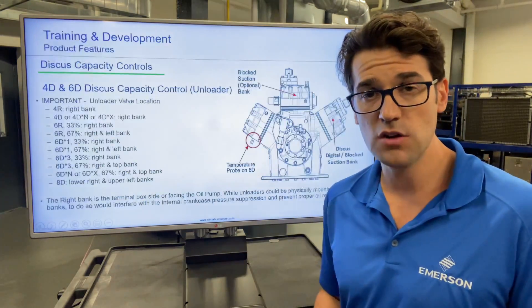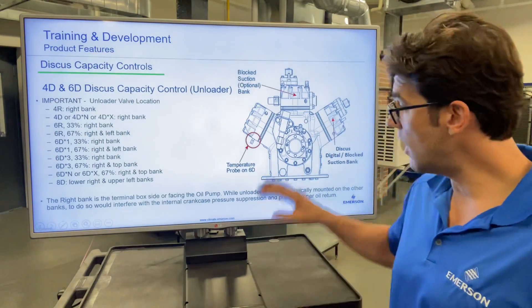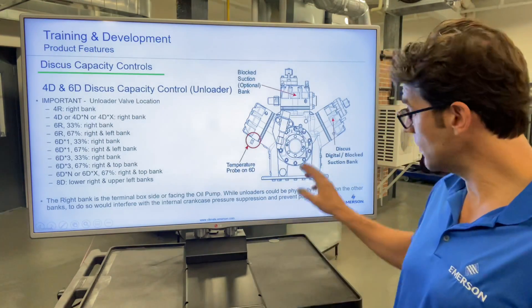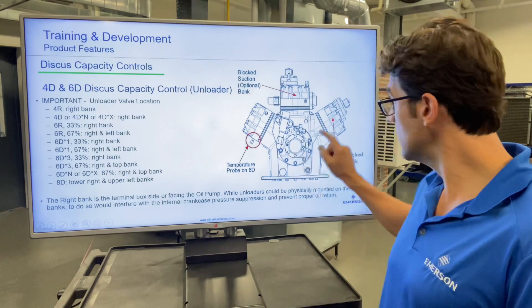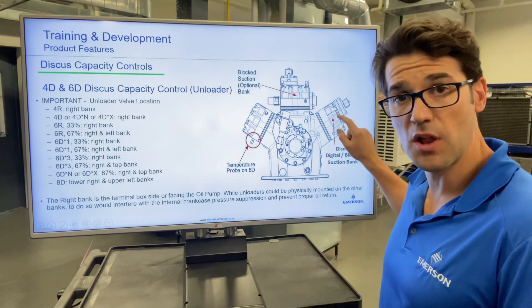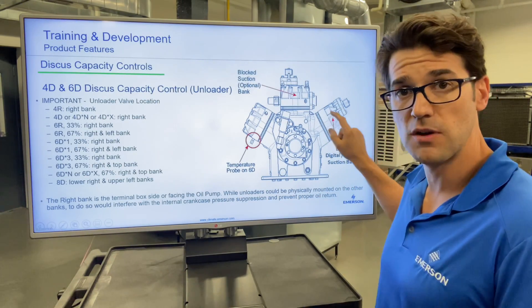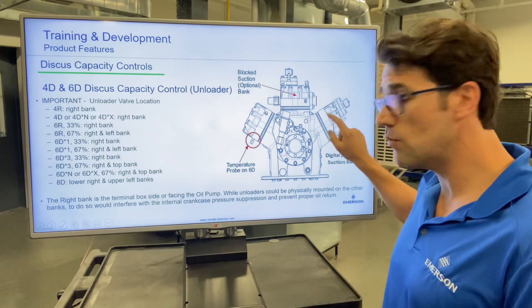The last thing I want to talk about is how it works on a 6D compressor. When you're looking at the pump, this right hand side would be the block suction or digital. I'll do another video on digital, but this right one would be digital.